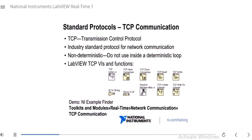TCP is a very common protocol used over the network. Its advantages include ordered data transfer, retransmission of lost data, it's connection-based so the writer and reader have an established connection, and it guarantees error-free data transfer — making it a very good protocol for reliable communication. Like other forms of network communication it's non-deterministic, since things on the network could slow it down, so don't use TCP functions inside a deterministic loop. On the slide you see examples of TCP VIs and functions — you start a connection with TCP Open Connection or TCP Listen depending on whether you're the server or client, and you can do TCP reads and writes to send string data back and forth.